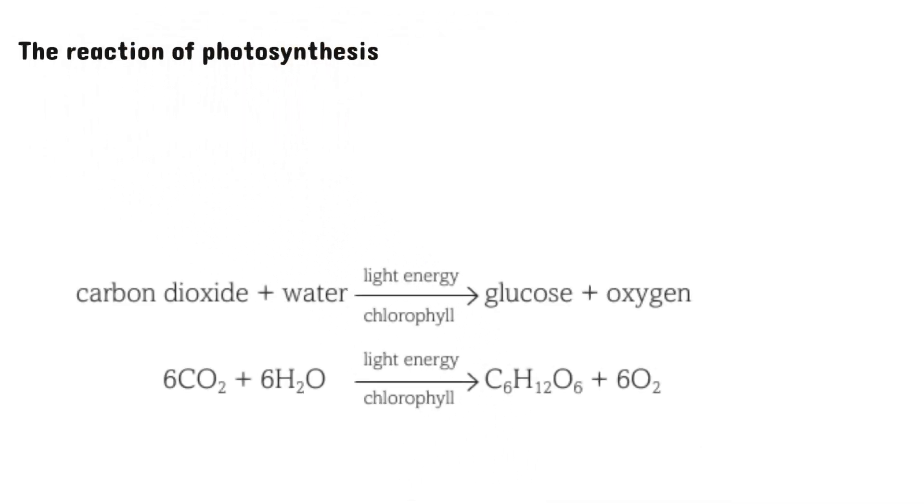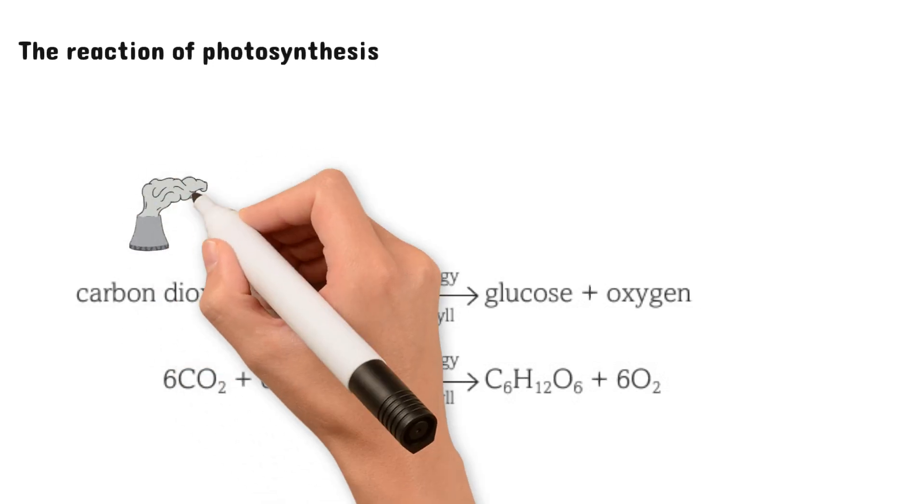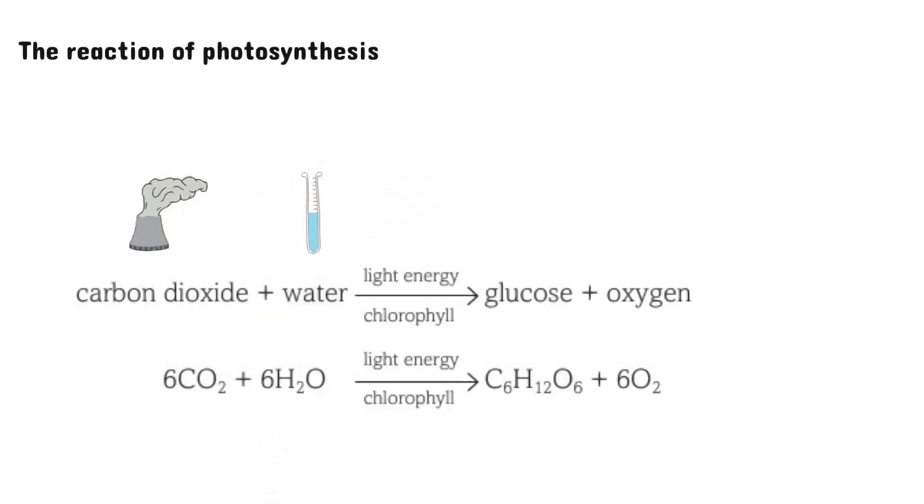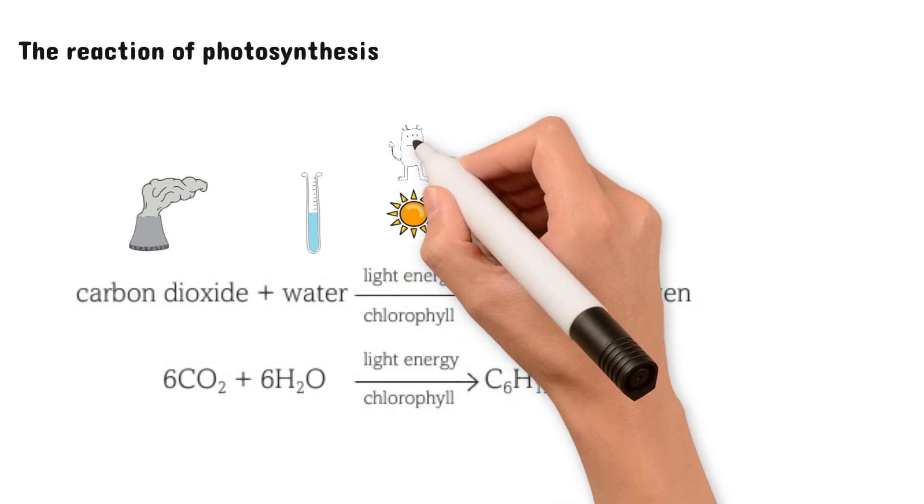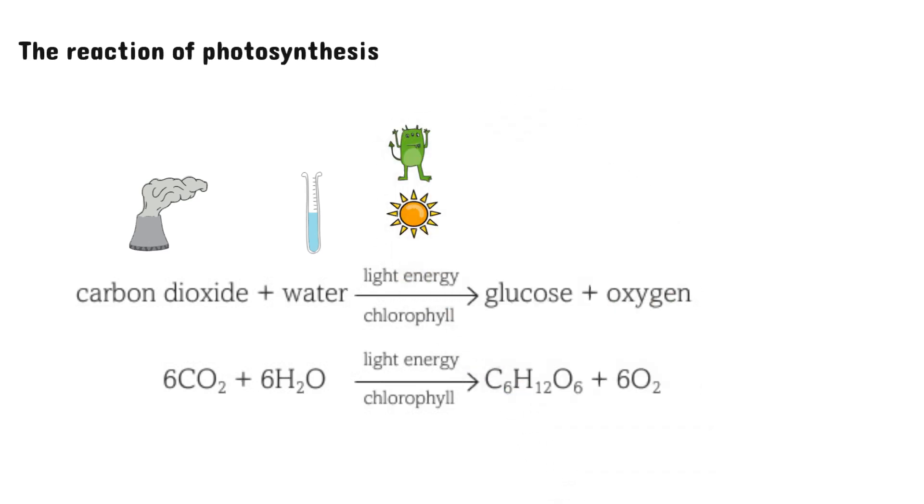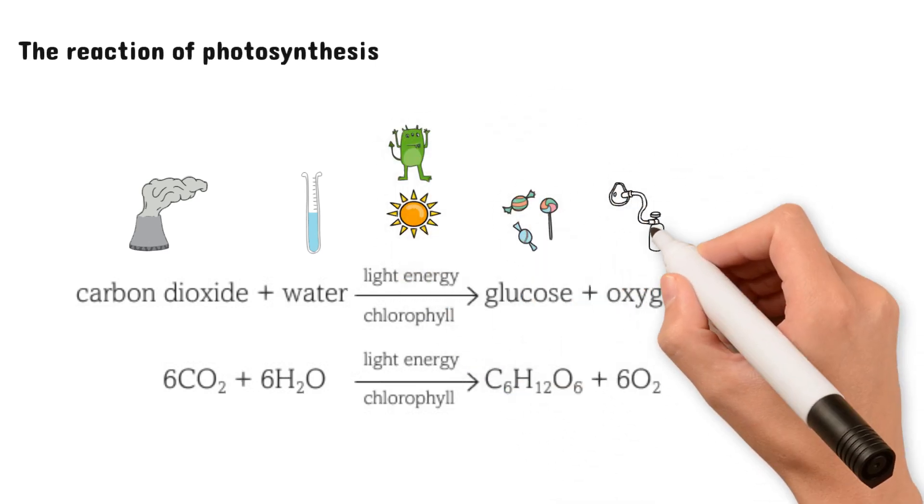This is the overall reaction, which I'm sure you're familiar with. Carbon dioxide combines with water and they react together with the help of light energy and chlorophyll to produce glucose and oxygen. But we need to understand what happens in more detail.